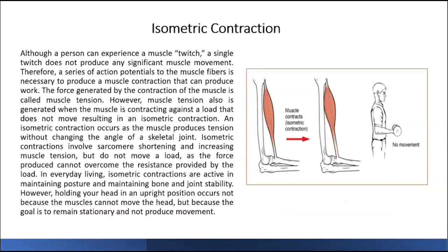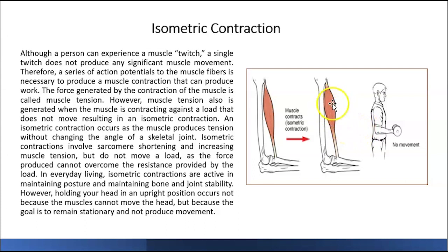The other types of contractions we have are isometric and isotonic. Isometric — iso means the same, metric means length. So imagine you are pushing a wall. Your muscle length will not change because you can't move the wall. You produce a force to push the wall, yes, but the length of your muscle did not change because you were not able to move the wall. This is called isometric contraction.